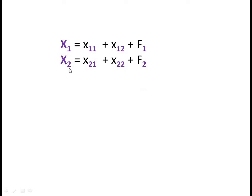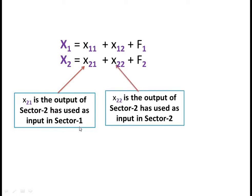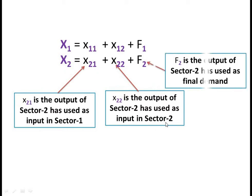Similarly, the output of sector 2, that is x2, is equal to x21 plus x22 plus f2. Here x21 is the output of sector 2 used as input in sector 1, and f2 is the output of sector 2 used as final demand.